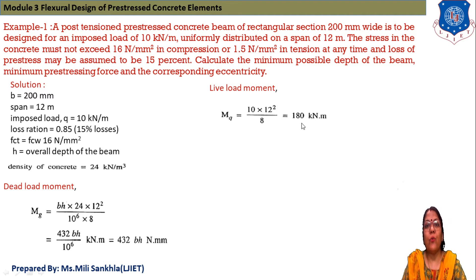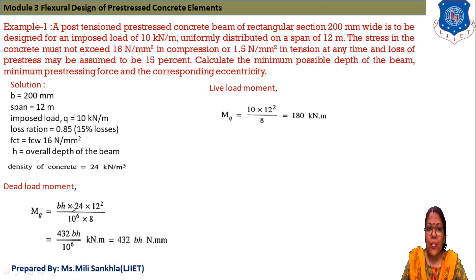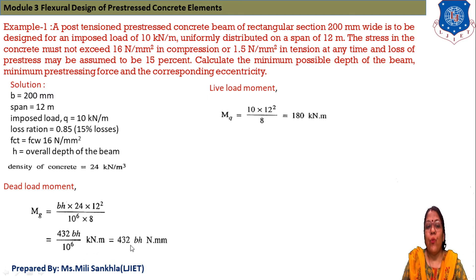The dead load moment M_G = WL²/8, where W is the self-weight of the beam. W = B × H × density = B × H × 24 kN/m³. Converting units, M_G = 24 × 12² × B × H / (8 × 10⁶) = 432·BH N·mm, where B and H are in mm. So M_G = 432·BH N·mm.